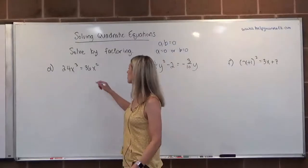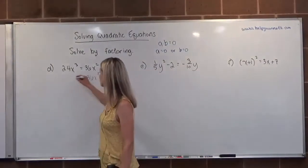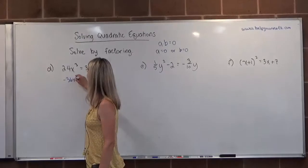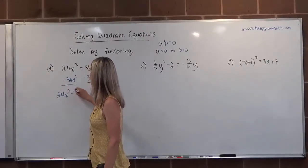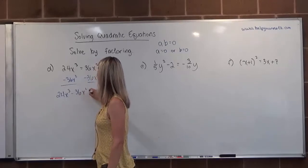So the first thing I'm going to do is subtract 36x squared from both sides. 24x cubed minus 36x squared is equal to zero.